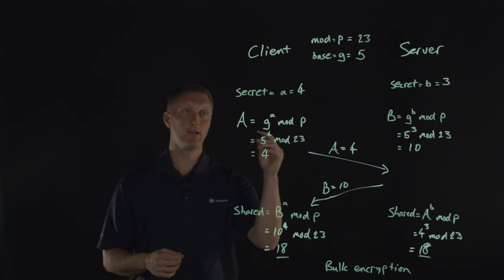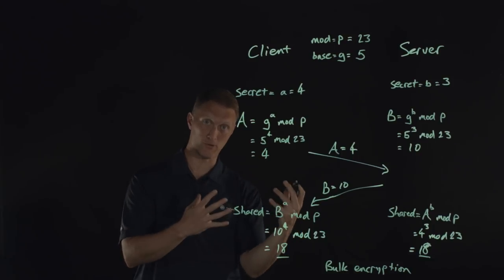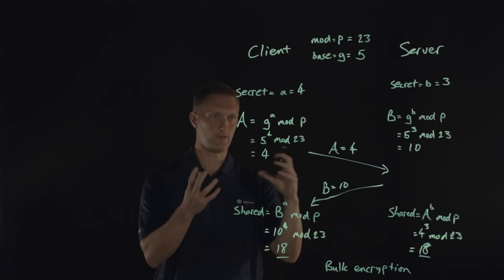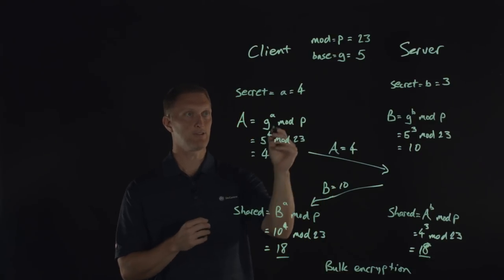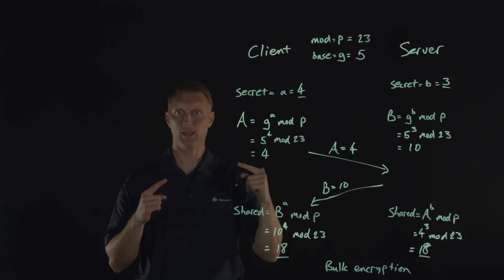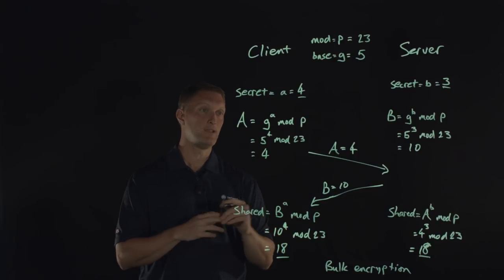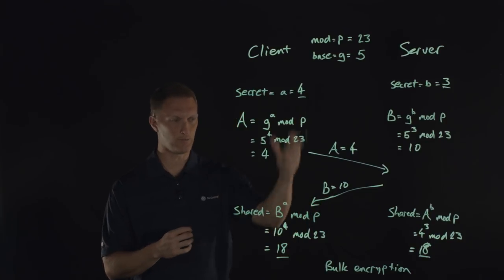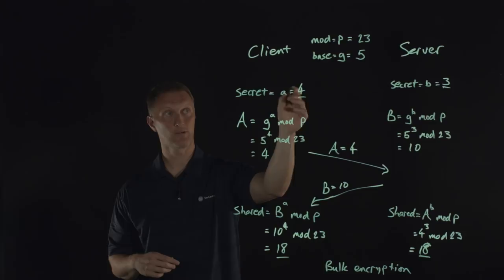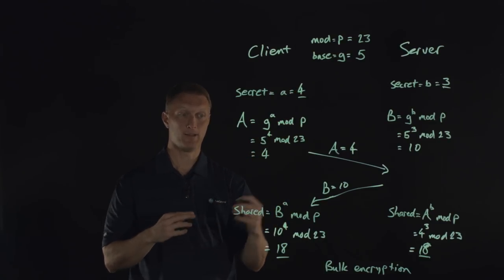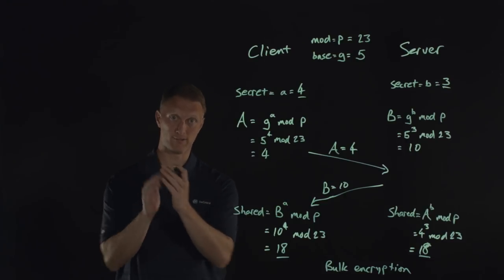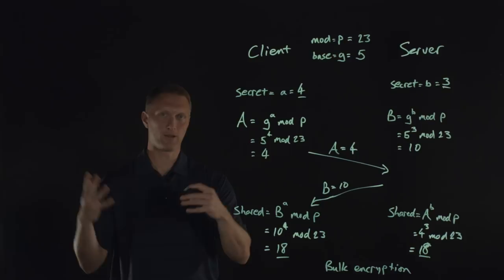One last thing: whenever you hear the term Diffie-Hellman ephemeral, ephemeral means very short-lived. In the context of Diffie-Hellman ephemeral key exchange, what happens is these secret values — the random integers the server and client generate on their own — change every single session between a client and server. So even if you were to somehow calculate the shared key in one session, because these secret values change every single time, you would not be able to go back and decrypt every message between client and server — only that one session. That's what we call perfect forward secrecy.